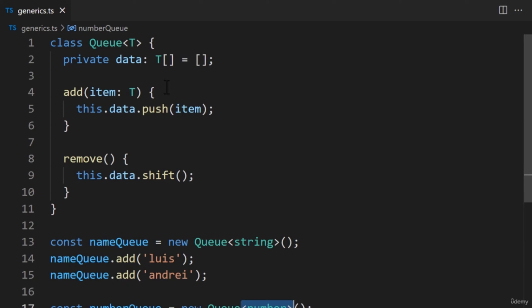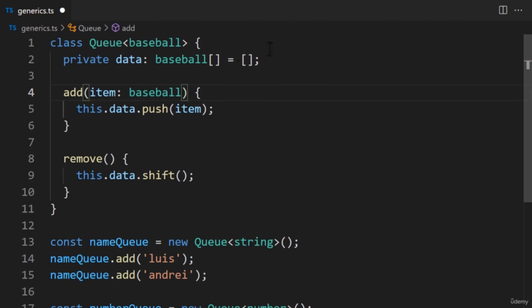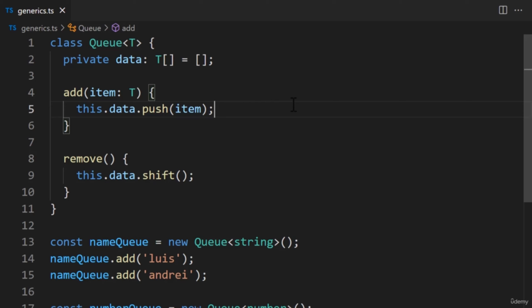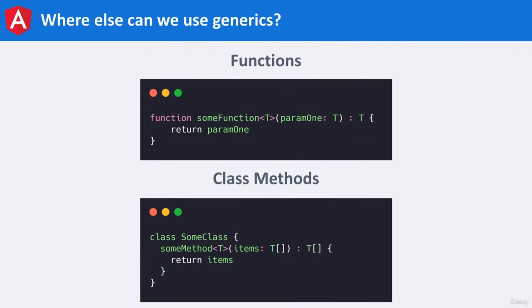You may be wondering, why the letter T? Truthfully, we can use any name we'd like — we can even swap it with the word 'baseball' and the class will still work. However, it's common practice to use the letter T, which is short for type. It's not required but standard among developers. Generics can be applied to functions and class methods — they're not exclusive to classes. Throughout this course, generics will pop up. It's not common to create them, but it's always good to know how they work under the hood.